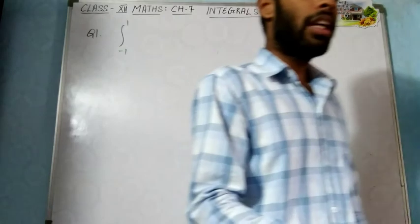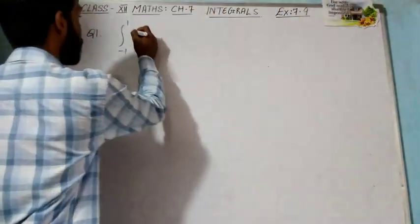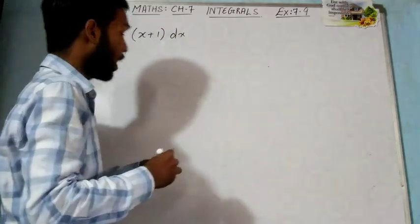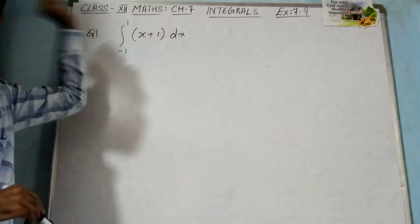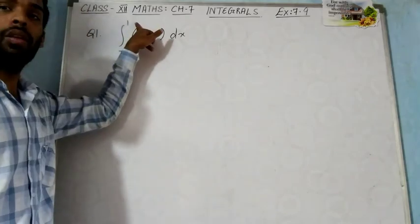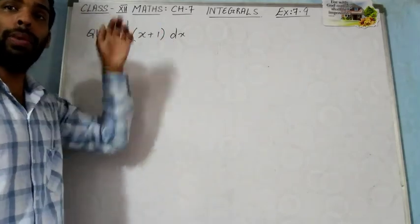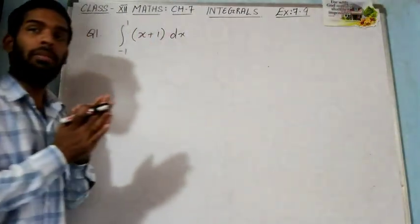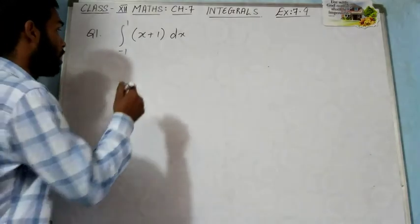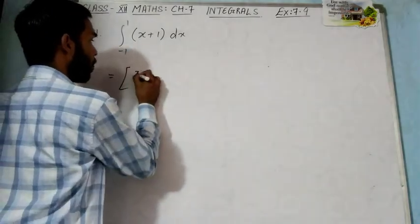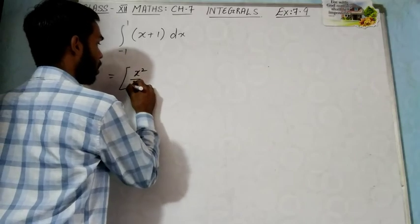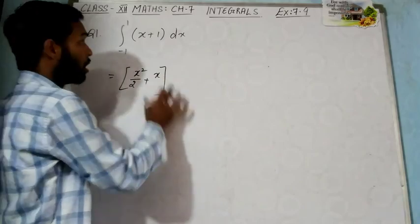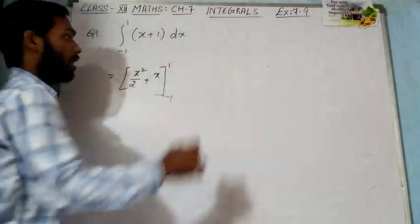Question number 1: integral from minus 1 to 1 of (x + 1) dx. You have to integrate (x + 1) with respect to x, with lower limit minus 1 and upper limit 1. For definite integrals, first find the integration: the integration of x is x²/2, and of 1 is x. After that, put the limits — lower limit was minus 1 and upper limit was 1.